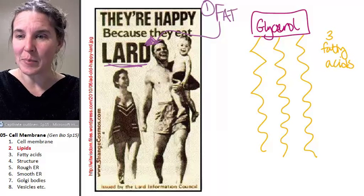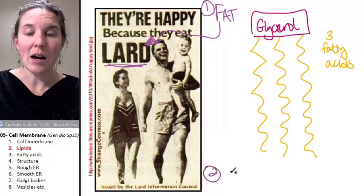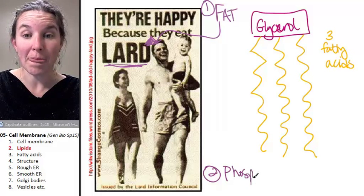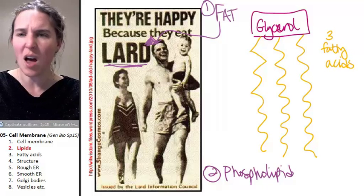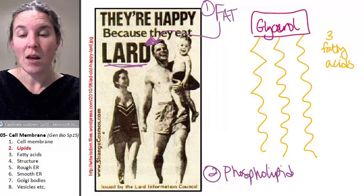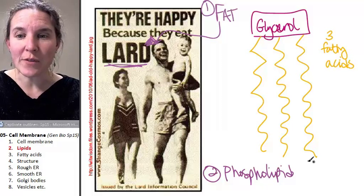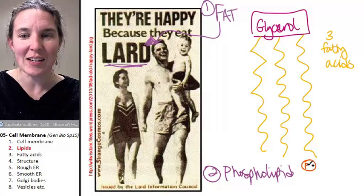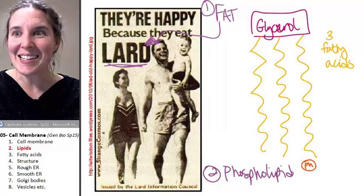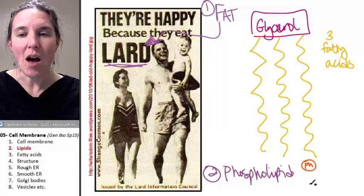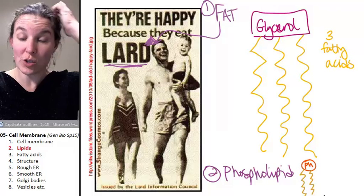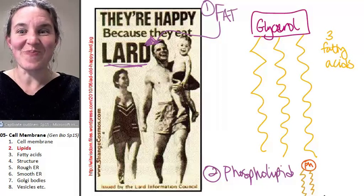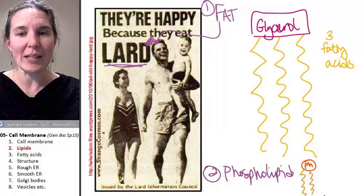Another kind of lipid is a phospholipid. A phospholipid has a phosphate group. And how many fatty acids? Two fatty acids — not three, just two. And phospholipids are really, really cool.